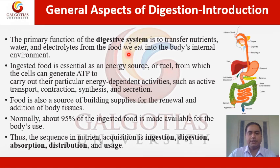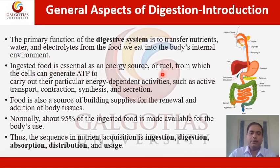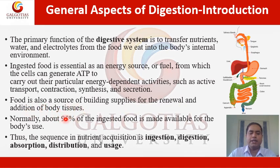The primary function of the digestive system is to transfer nutrients, water, and electrolytes from the food we eat into the body's internal environment. Ingested food is essential as an energy source from which cells generate ATP for activities such as active transport, contraction, synthesis, and secretion. Food is also a source of building materials for body tissue. Normally, about 95% of ingested food is made available for body use. The sequence in nutrition acquisition is: ingestion, digestion, absorption, distribution, and usage.